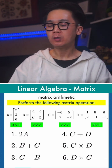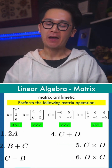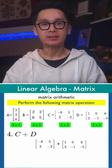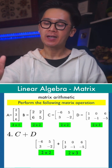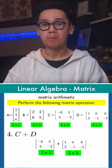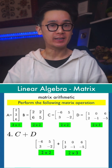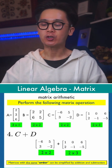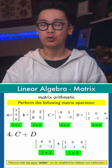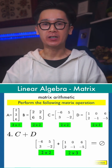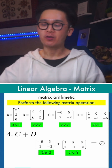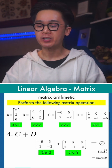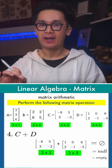For problem number four, we have C plus D. Matrix C is a two by two matrix and matrix D is a two by three matrix. By our basic rule for combining matrices by addition or subtraction, C plus D is an empty set because you cannot add or subtract matrices of different dimensions or orders. So this is a null set and we cannot perform addition for C and matrix D.